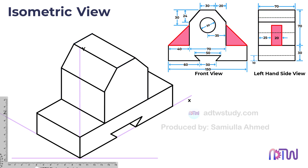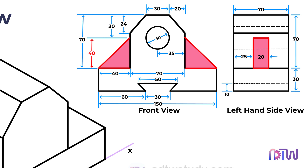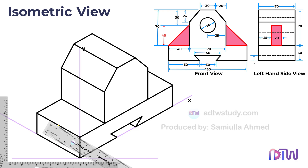Following the construction of the center portion with chamfers, we now proceed to draw the two side features. Only the left-hand side feature will be visible in the left-hand side view. The inclined portion has a thickness of 20 millimeters and a width of 40 millimeters. To determine the height, we subtract 30 millimeters from the 70 millimeters height of the center portion. Start by marking the center point on the side of the baseline, then mark points at a distance of 10 millimeters on either side of this center point.